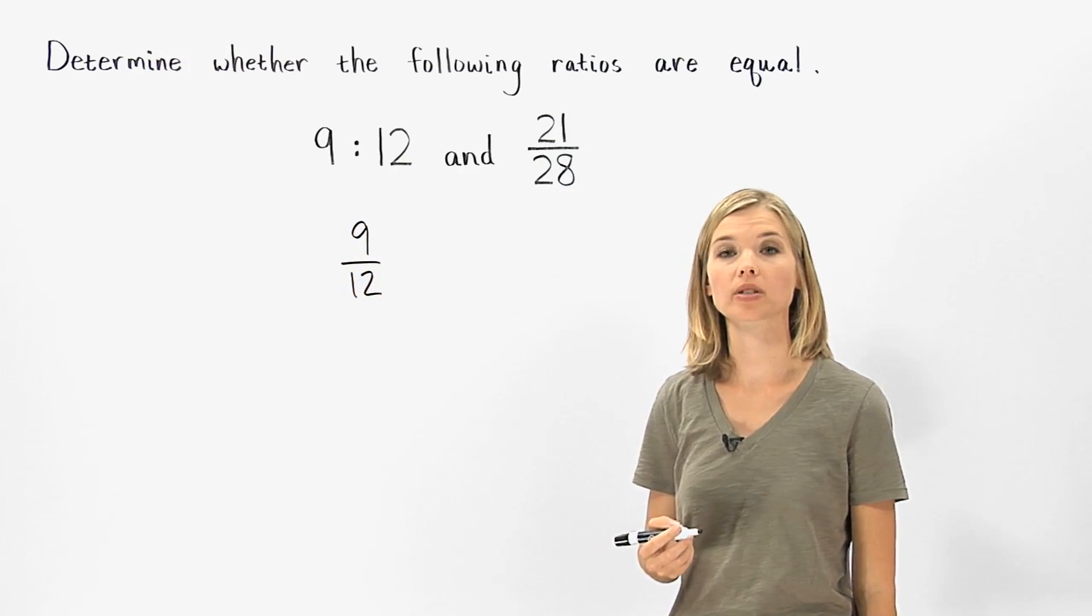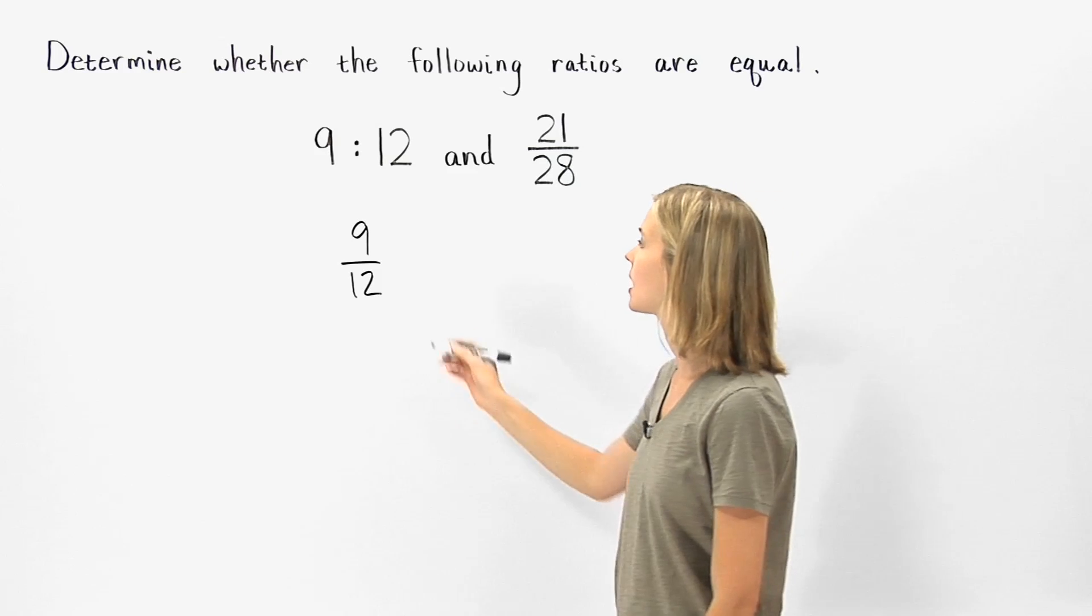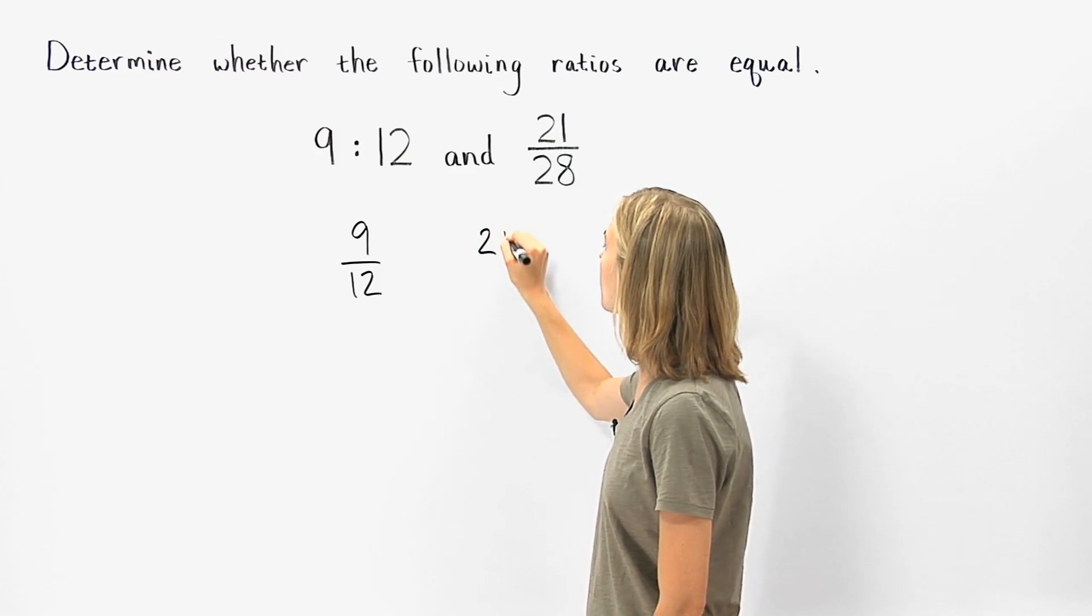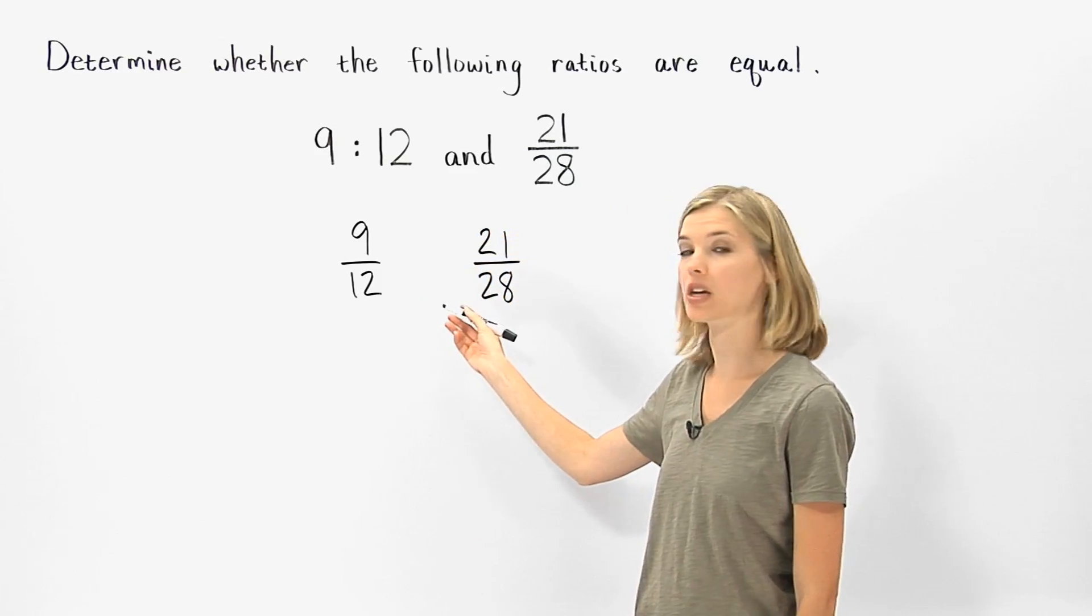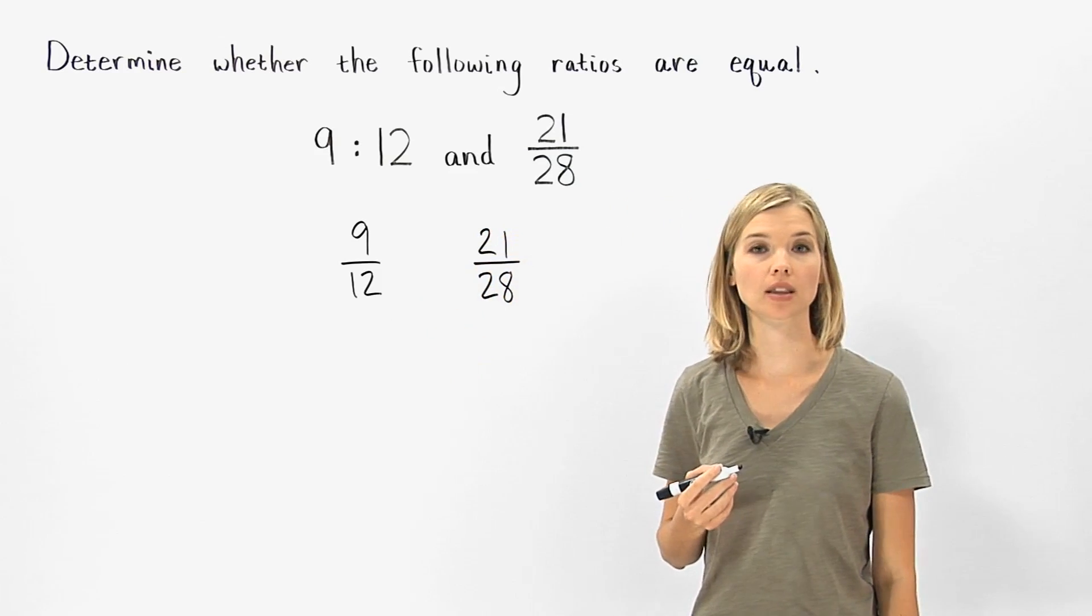Now we have fractions representing both of our ratios, 9 over 12 and 21 over 28. To determine whether these fractions are equal, we write each fraction in lowest terms.